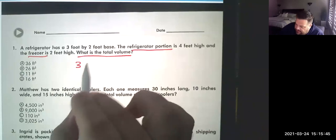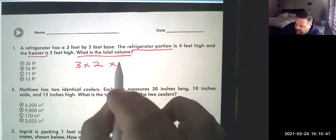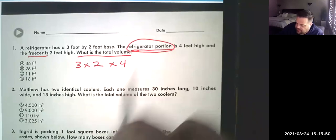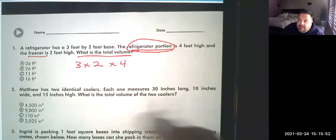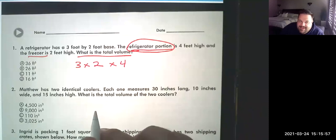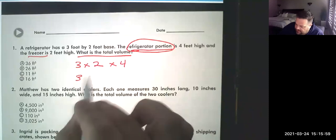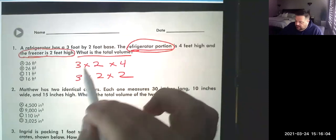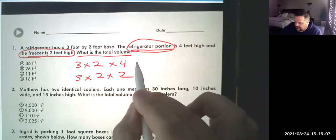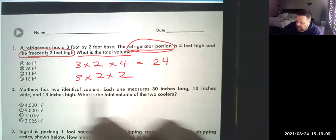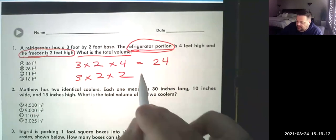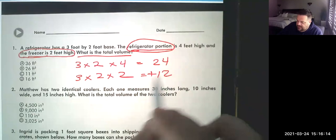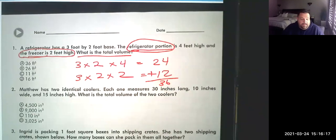So this is basically 3 times 2 times 4 for the refrigerator. By now I hope you know that's length times height times width. And then the freezer would be 3 times 2 times 2 because of the freezer height down here. So 3 times 2 is 6 times 4 is 24. 3 times 2 is 6 times 2 is 12. And then we would add them together to get 36. So for number one, your answer would be A.